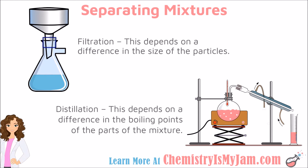In filtration, you use a difference in the size of the particles. The mixture is dropped into the filter; solid particles are caught by the filter, while the smaller liquid particles pass through and are collected below. Distillation depends on differences in the boiling points of the parts of the mixture. When you apply heat, one component boils off first; the gases travel up through the chamber, condense, and are collected separately. Boiling point is a physical property.